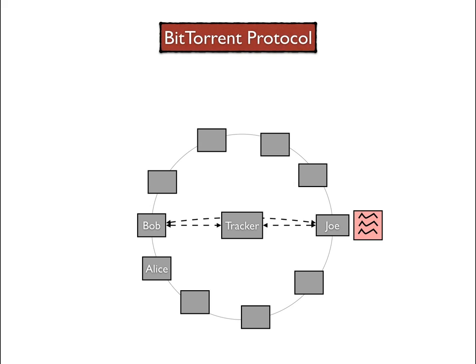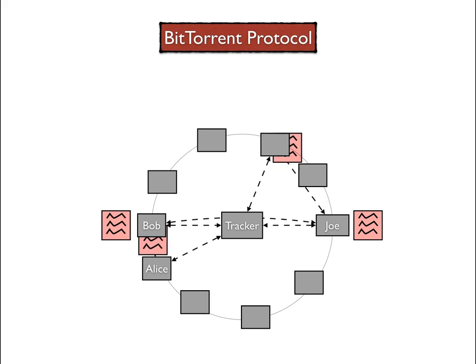After Bob has obtained a copy of that file, he also tells the tracker node that he can also provide the red file. Later, when Alice wants a copy of the red file, she connects to the tracker node and requests information about nodes that are providing it. She learns about both Bob and Joe and can decide to connect to either one. Now the distribution of the red file can happen simultaneously from both Bob and Joe. Note that there is still a centralized server node that performs the tracking. However, providing tracking services requires very little resources compared to distributing the files, so a tracker node can coordinate many nodes. The tracker node can still become a bottleneck or be the target of attacks to disrupt the network.